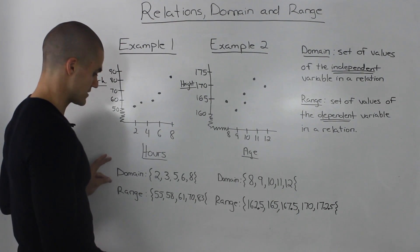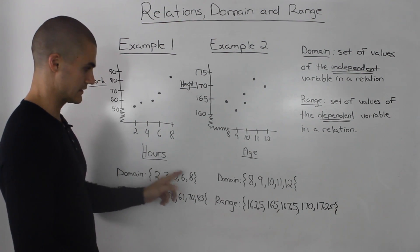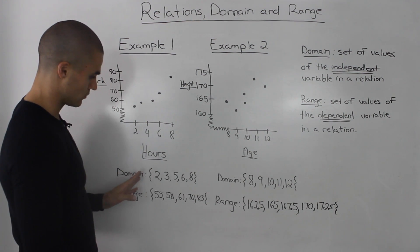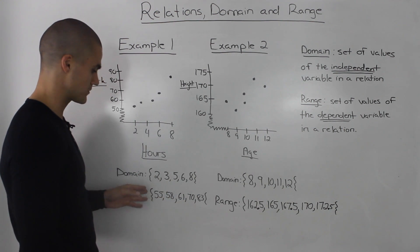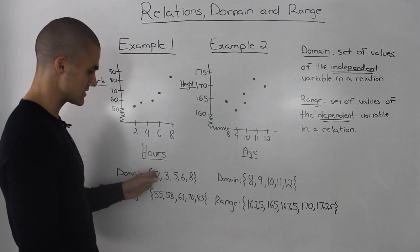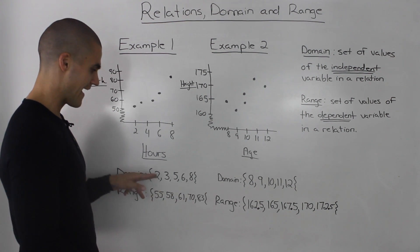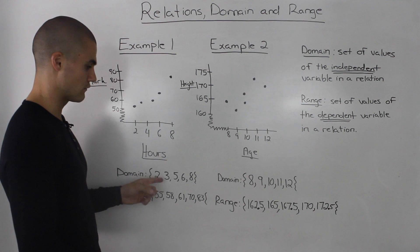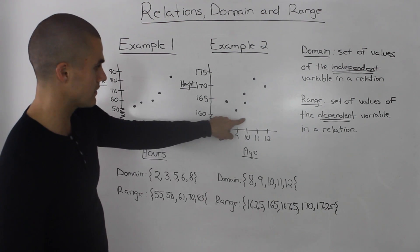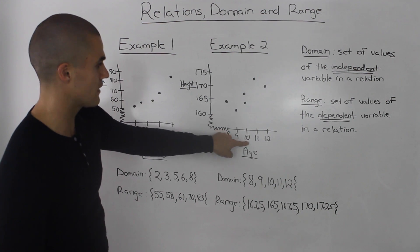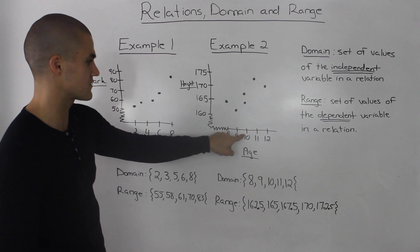Going back to our two examples, if we were asked to find the domain and range of each of them, it would be listed out like this. It's actually sort of similar to the mapping diagrams. You list out all the points from lowest to highest in order, and you don't repeat any variables that appear twice. For example, this 10 here—notice how this x value of 10 repeats twice.